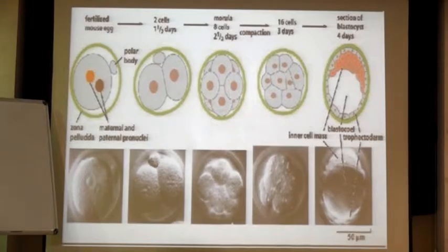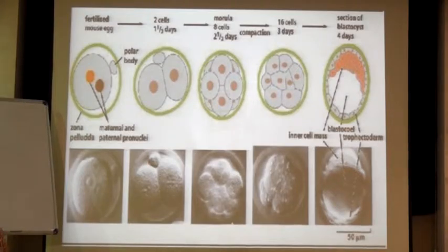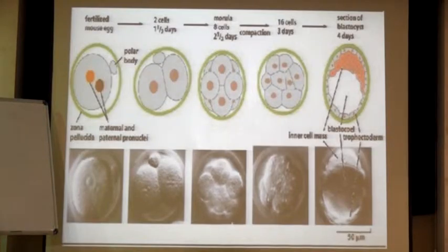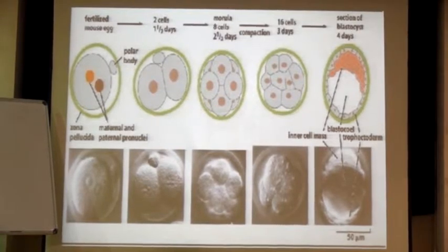At one fine point, cleavage will come to its final stage and you are going to have a ball with lots of cells only. When you have a 16-cell stage it is known as morula stage. When you move further from 16 towards 100 cells, you are going to have blastula stage. As cleavage continues further, after about 32 cells, it starts forming a small cavity inside — just like a cricket ball with a cavity within it.